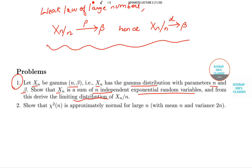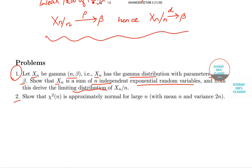Now the next question is, show that chi square n is approximately normal for large n with mean n and variance 2n.